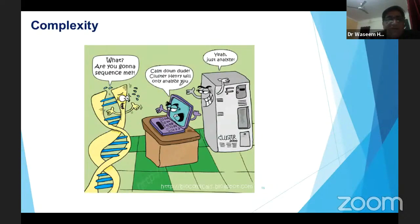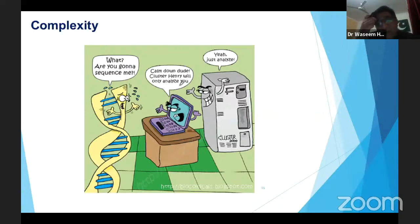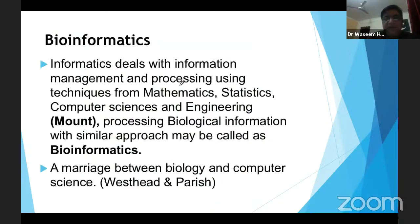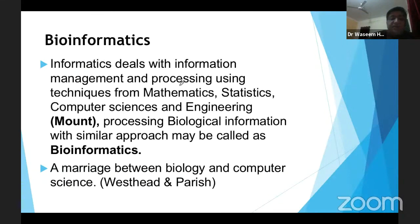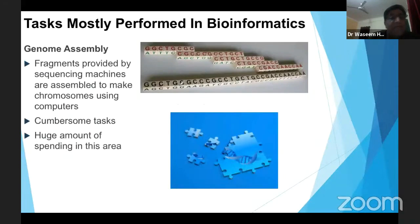Once sequencing is done, we rely on heavy computers and big machines to put these pieces back together — like a jigsaw puzzle — from 3.4 billion nucleotides broken into fragments of hundreds, giving millions of fragments to reassemble. Bioinformatics, or informatics, deals with information management and processing using mathematics, statistics, computer science, and engineering — applied to biological information. Some people say it's the marriage between biology and computer science.